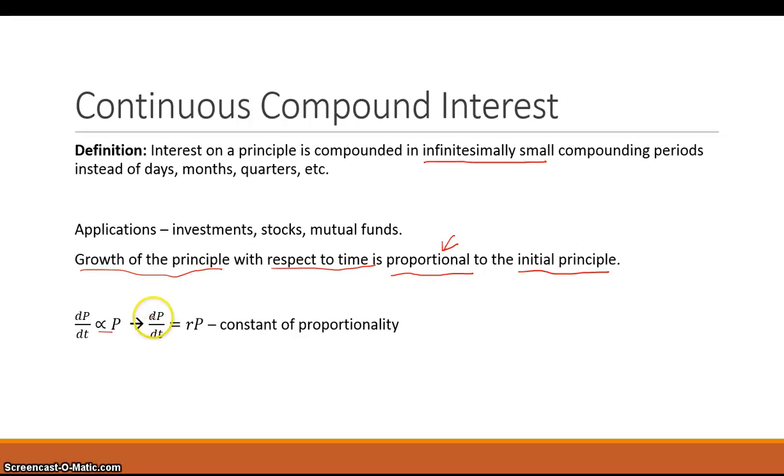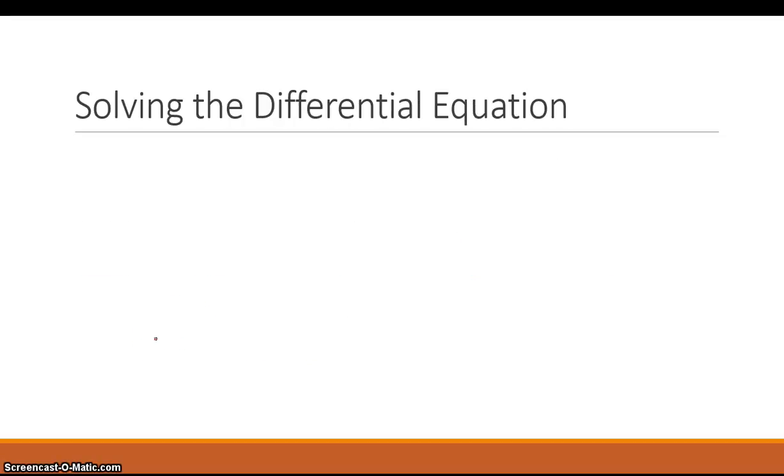So the growth of the principle with respect to time is proportional to the initial principle. Or we can change it a little bit, turn it into an actual equation, and you have the rate of change of the principle with respect to time is equal to R times the principle. So R is our constant of proportionality. And also R can be looked at as the interest rate. So R is the interest rate. And right here, we have actually come up with our differential equation. So that's our differential equation. So we can look at this differential equation, and we can solve it.